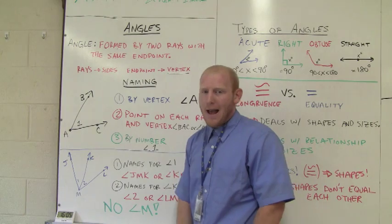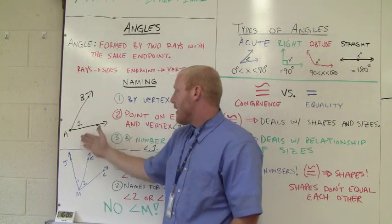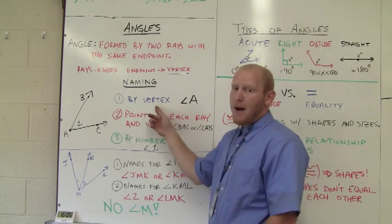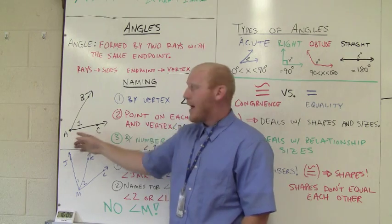So how are we going to name angles? Well, here I have a diagram. I have this angle right here. I can name it first by its vertex. Its vertex would be its endpoint from up here, so it would be angle A.